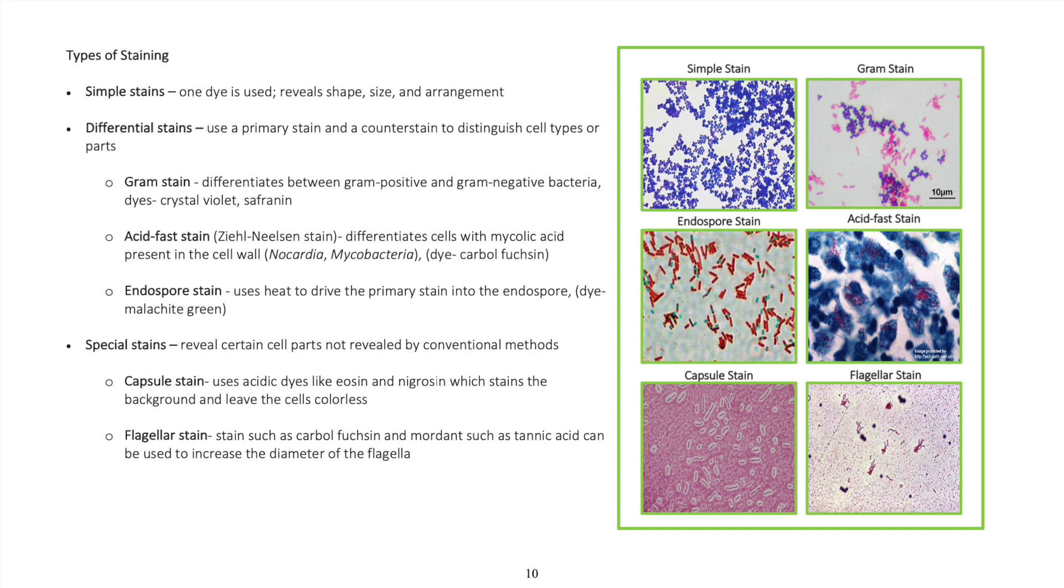Acid-fast stain differentiates cells with mycolic acid present in the cell wall of Nocardia and Mycobacteria. Dye: carbol fuchsin.